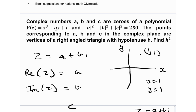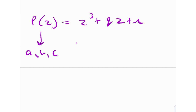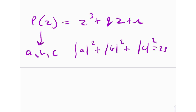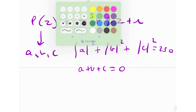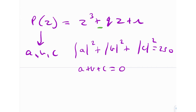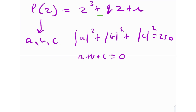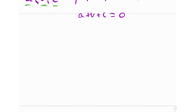They've given us two key conditions. First, the sum of squares of the moduli is 250. Second, a + b + c = 0 — a direct consequence of Vieta's formulae, because there is no z² term in the polynomial, meaning the coefficient of z² is 0, so the sum of the roots is clearly 0. Additionally, the three points a, b, and c correspond to vertices of a right-angled triangle.